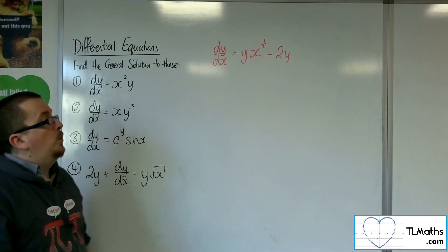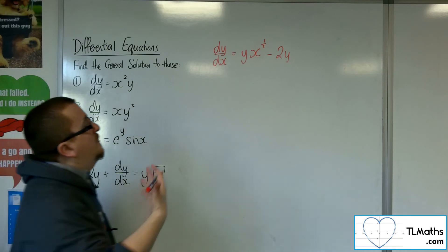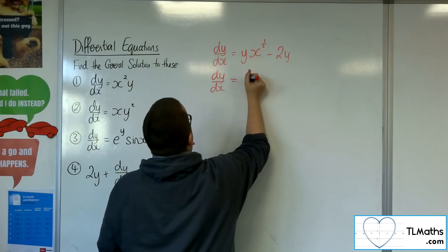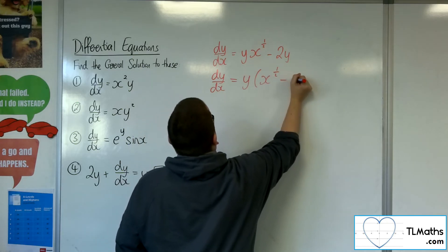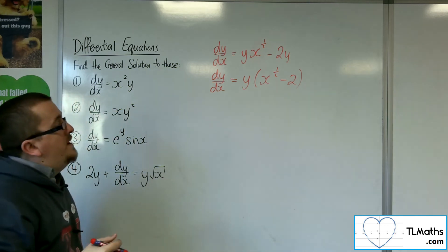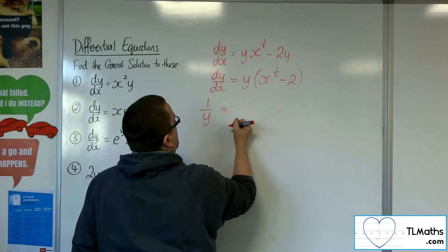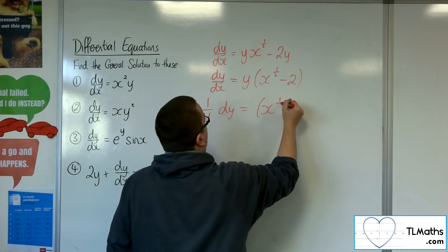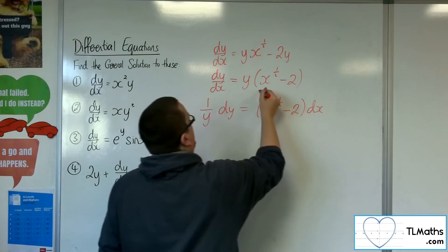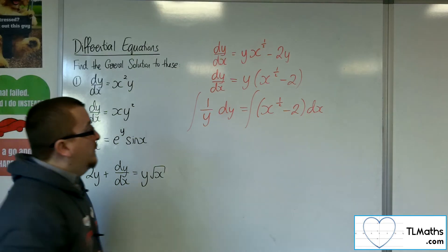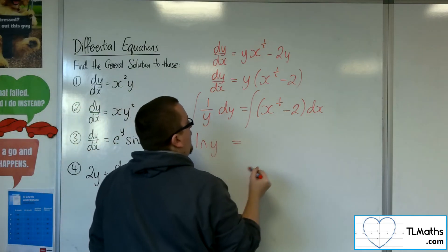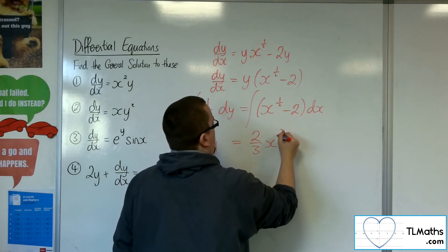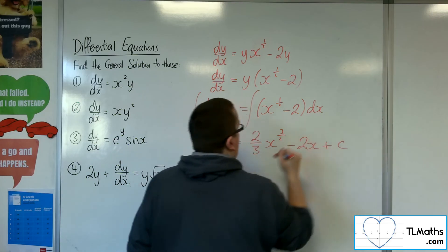So I'm going to get minus 2y. Now, as it stands, it might not be immediately obvious as to what I need to do next. However, if I factorize the right-hand side, it makes it a little bit clearer. So now I can divide both sides by the dy, multiply both sides by the dx, and then integrate both sides. So I'm going to get log y is equal to, add 1 to the power, divide by the new power, so 2 thirds x to the 3 halves minus 2x plus c, constant of integration.